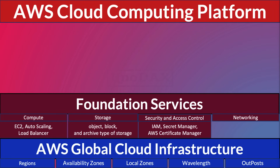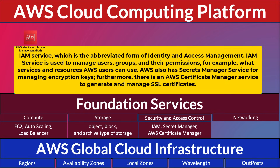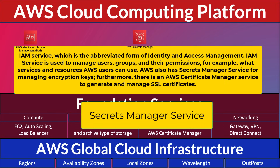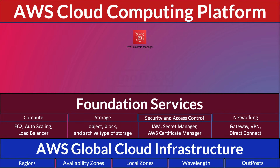Another critical category of foundation services is security and access control. This category has IAM — Identity and Access Management — which manages users, groups, and their permissions, such as what services and resources AWS users can access. AWS also has Secrets Manager for managing encryption keys, and AWS Certificate Manager, which generates and manages SSL certificates.